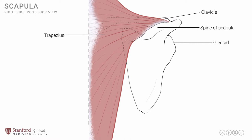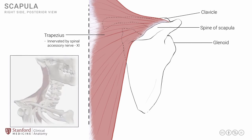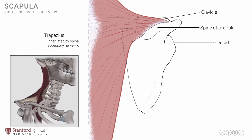This muscle is innervated by the spinal accessory nerve. A clearer view is seen in the photograph, showing the trapezius attaching onto the acromion and the lateral end of the clavicle. When the upper and lower fibers contract simultaneously, the result is rotation of the scapula, which is an integral part of shoulder movements. It is difficult to abduct the shoulder to its full 180 degrees without scapular movement, making this an important part of shoulder function.